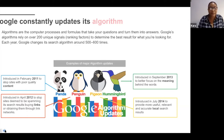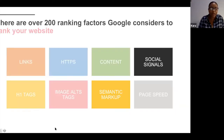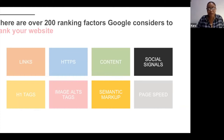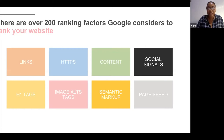Google always names algorithm updates after animals — the last one was apparently a dinosaur update — but they don't give much information about updates now, which is quite annoying. There are over 200 ranking factors that Google considers when deciding where to place you in their index. These include content, backlinks, social signals, page speed, semantic markup, image alt tags, H1 tags, and title tags — essentially anything Google looks at to decide how to rank your website. If you're not paying attention to these factors, Google won't rank you above a competitor.